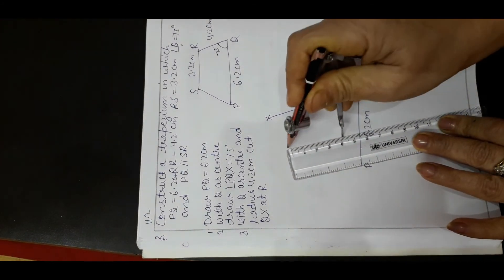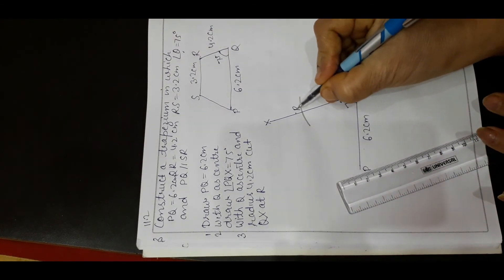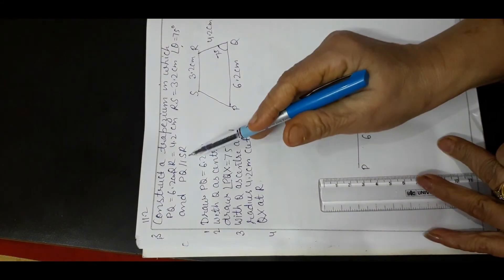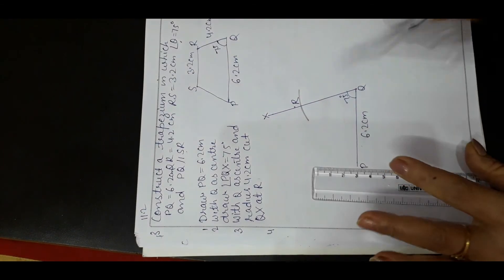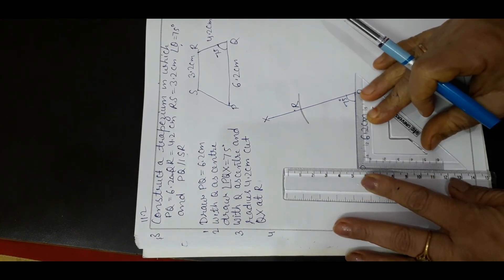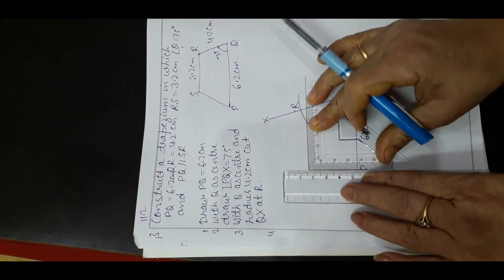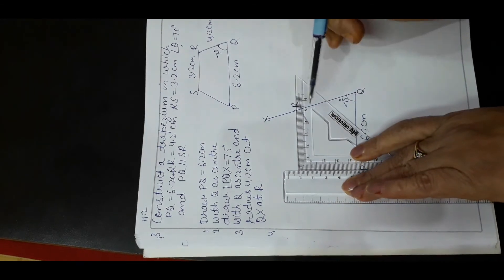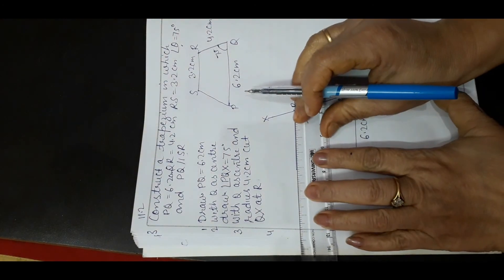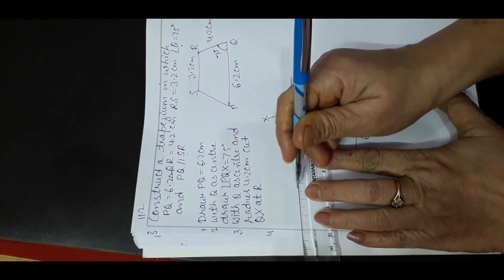Take 4.2 cm on the compass and cut QX at R. Now, using a ruler and set square, draw a line through R parallel to PQ. Extend this line and name it RY.